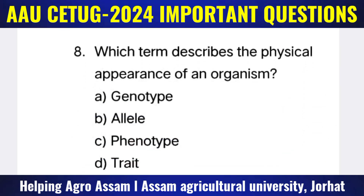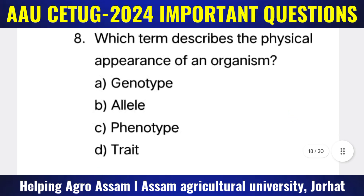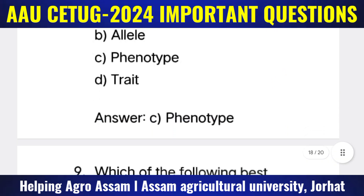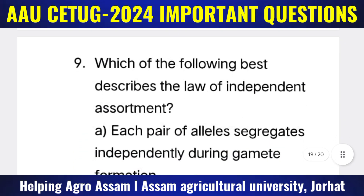Question 8: Which term describes the physical appearance of an organism? Options: (A) Genotype, (B) Allele, (C) Phenotype, (D) Trait. The correct answer is option C — phenotype.